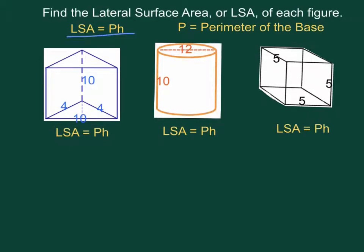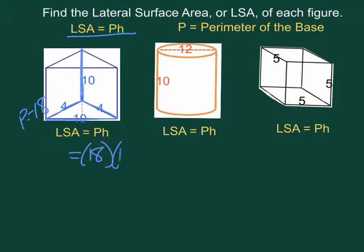The formula for lateral surface area is the perimeter times the height. Starting with our triangular prism, the perimeter of the base is 4 plus 4 plus 10, so our perimeter is 18. Our height is the distance between the bases, so that's 10. So our lateral surface area is 180 units squared — square units because we're finding area.